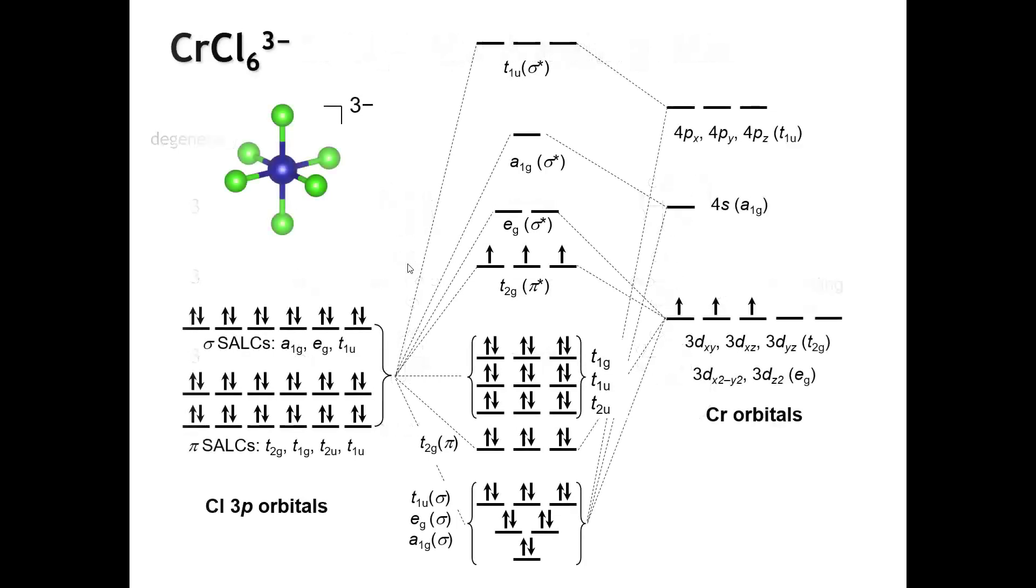Now, in the MO diagram for this molecule, we can put all of this together: the 18 ligand SALCs that come from the chlorine 3p orbitals, and the 9 orbitals that come from the chromium. We just saw that there's 9 bonding MOs, which are shown down here, and then a corresponding 9 antibonding MOs. In here, we have 9 non-bonding MOs.